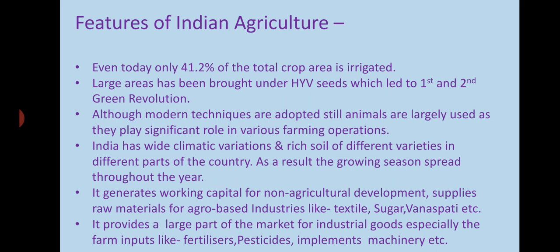The main features of Indian agriculture include that still today we have hardly 42% area under irrigation. Large areas have been brought under high-yielding variety seeds because of the first and second green revolutions in the 1990s, which started modern techniques in agriculture alongside primitive methods using animals. India also has wide climatic variety and very fertile soil in different parts of the country, so crops are grown throughout the year.